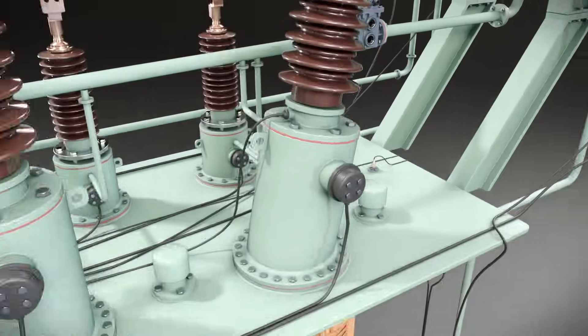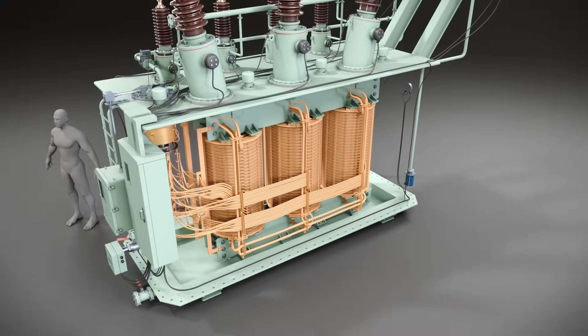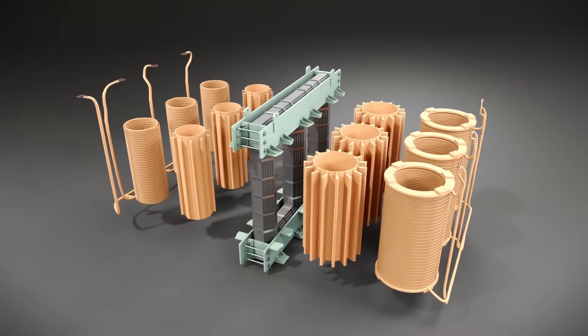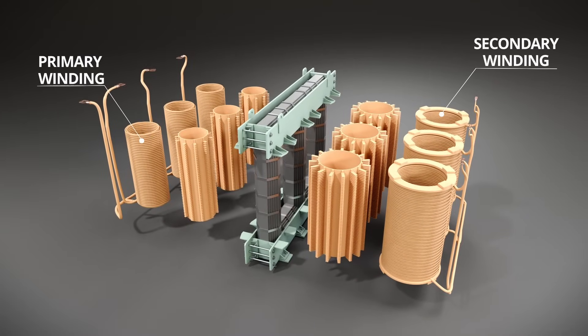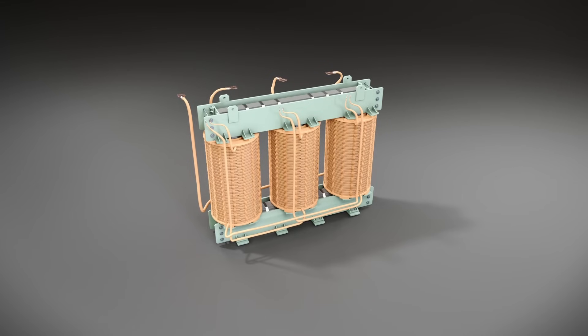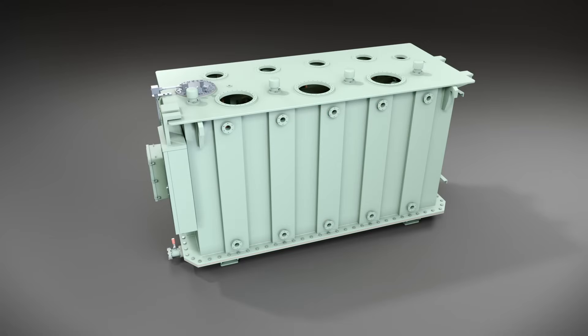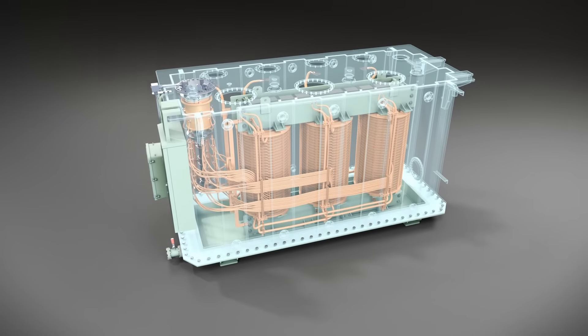A transformer is a static machine that primarily consists of primary and secondary windings wrapped around a ferromagnetic core. In power transformers, where voltage and current levels are very high, the core and windings are placed inside a tank to prevent external interference. The tank shields the transformer windings from